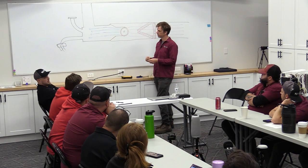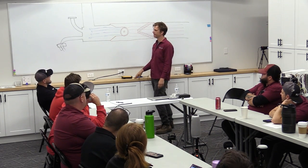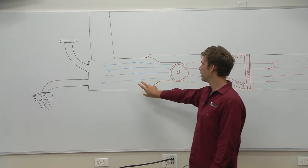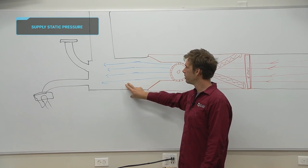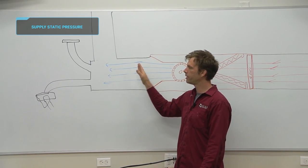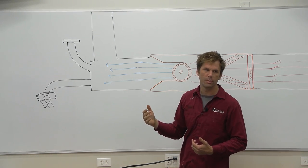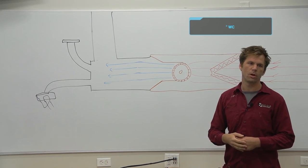Please never put ducts on the end like that. This is not how this is done. When you are measuring your supply static pressure, you're measuring what past this point is causing resistance to airflow and how much resistance is that.